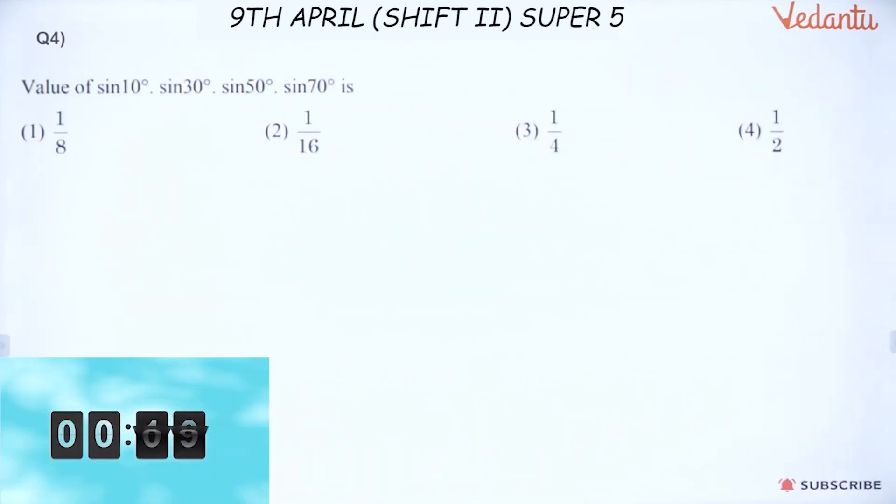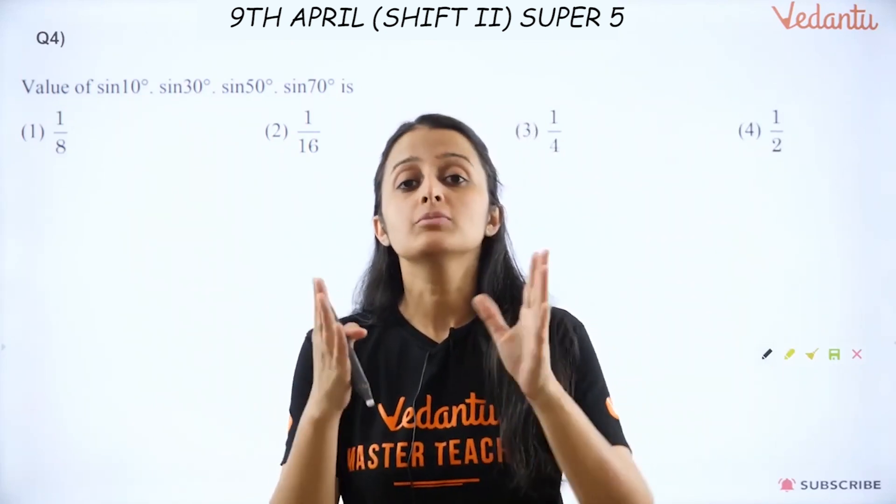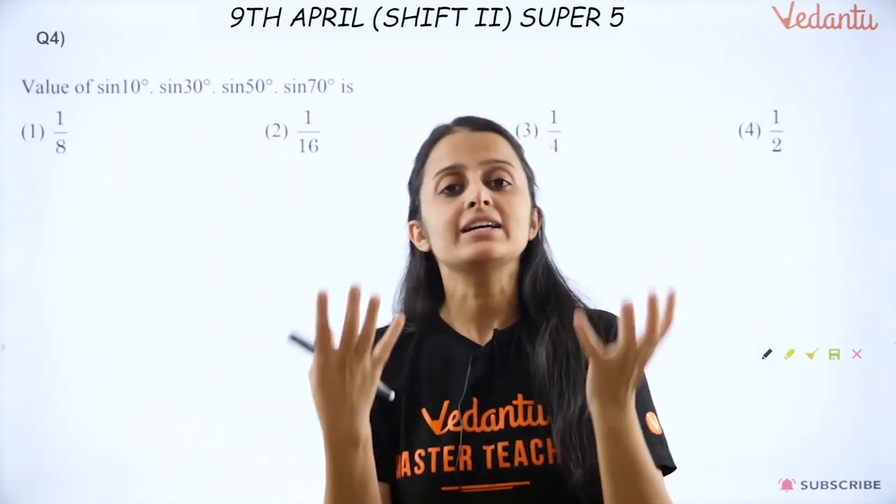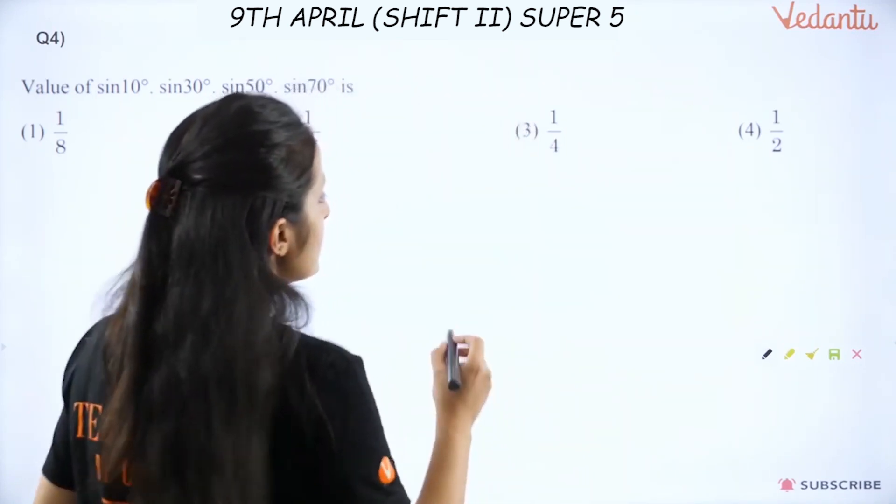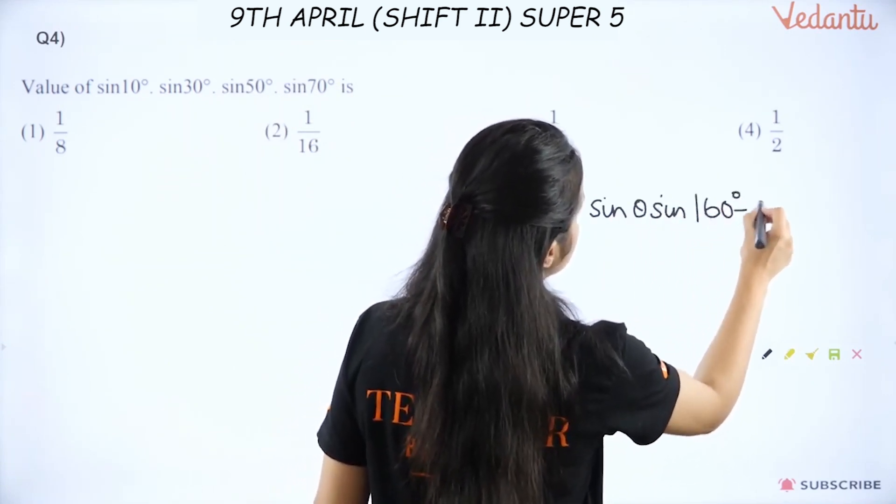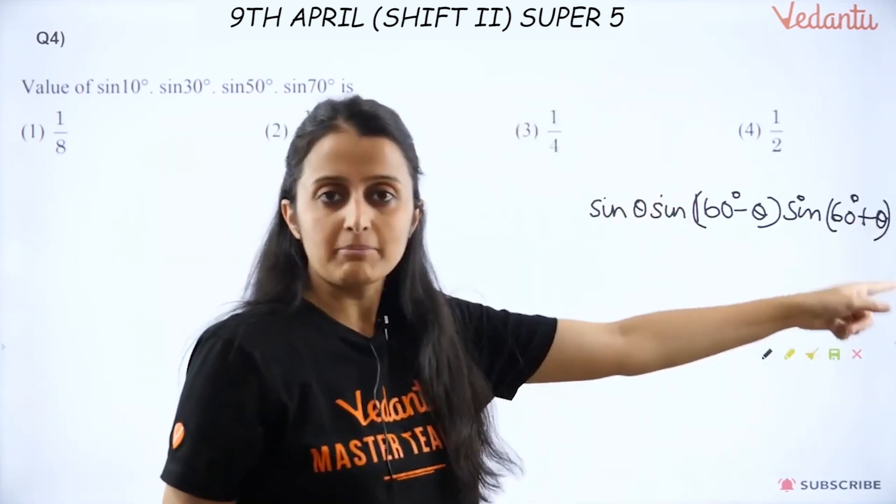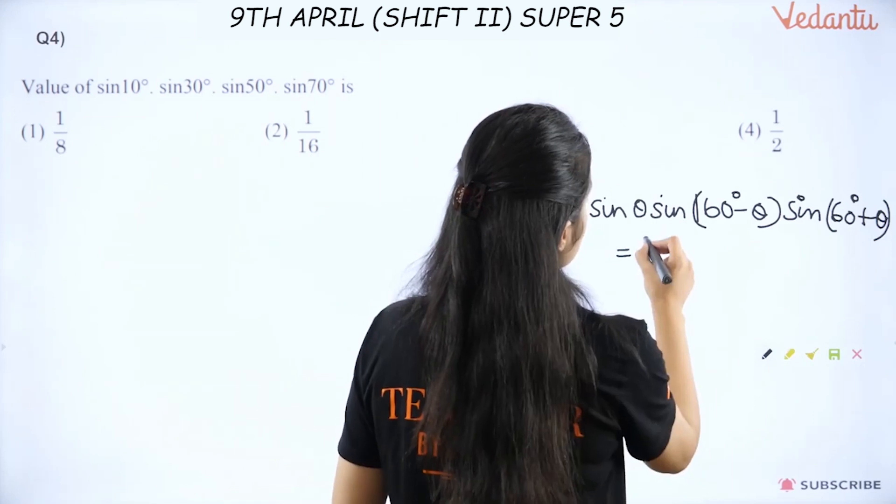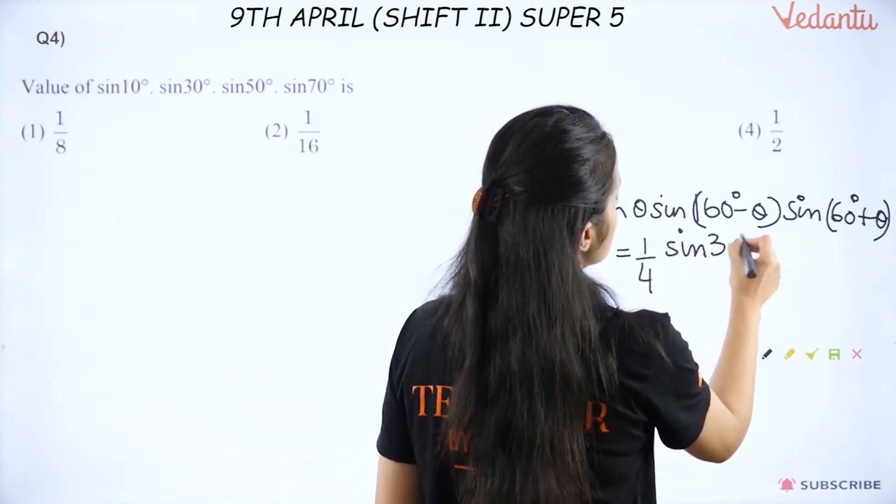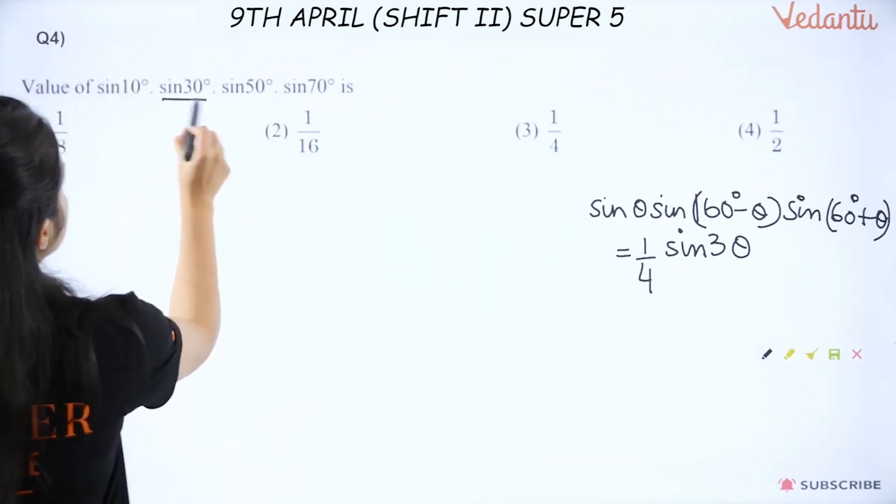Here it comes. This question is super easy because in this you are going to make use of a technique that you learned in class 11 trigonometry when proving a formula or result. The result goes like this: sin θ × sin(60° - θ) × sin(60° + θ) = (1/4) sin(3θ). We just have to use this result.